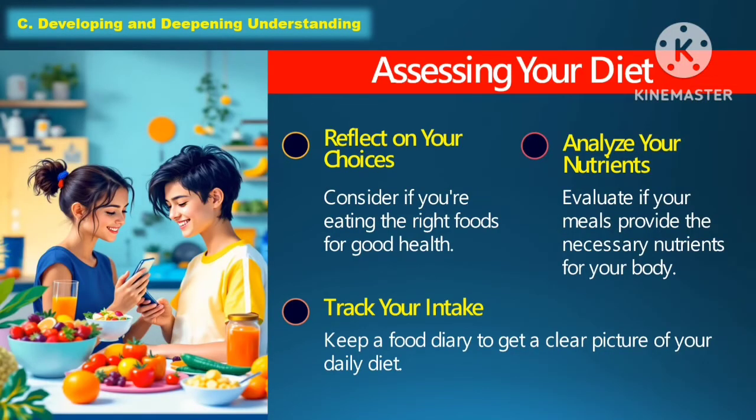The following is on how to assess your diet. The first one is to reflect on your choices — consider if you're eating the right foods for good health. Another one is to analyze your nutrients — evaluate if your meals provide the necessary nutrients for your body. And the third one is to track your intake — keep a dietary diary to get a clear picture of your daily diet.